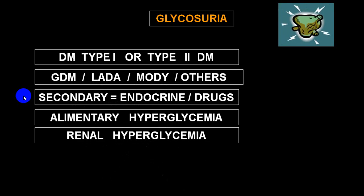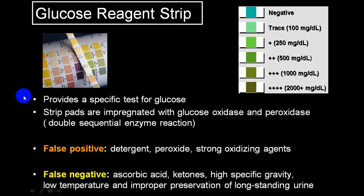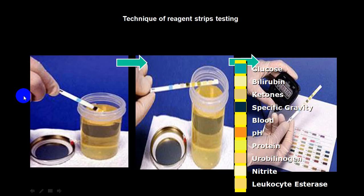Renal glycosuria has already been discussed. False positive results with reagent strips can occur if there is detergent, peroxidase, or a strong oxidizing agent present. False negative results can occur if ketones are present, if the urine has high specific gravity, or if the strips have not been properly preserved.